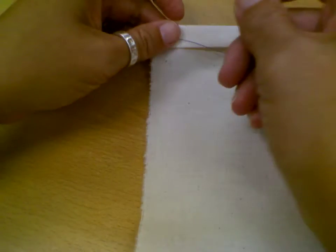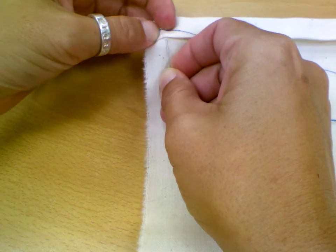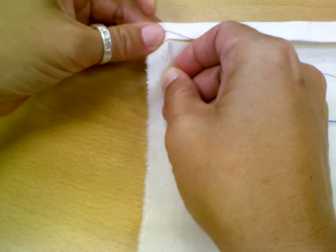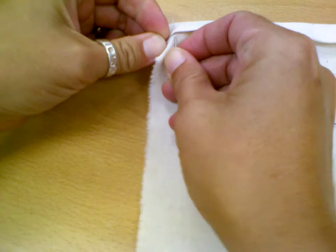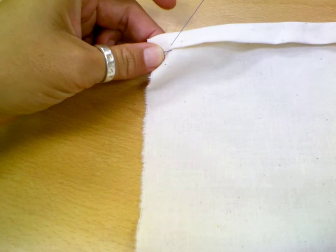Alright, now with a whip stitch you're going to come off the fold and then insert your needle right here. Just like that.